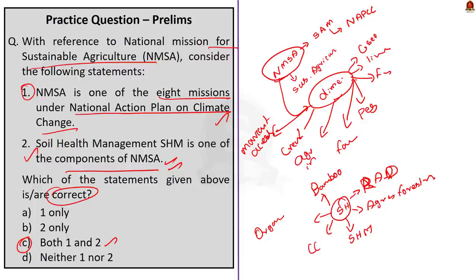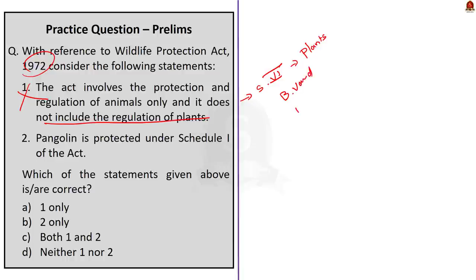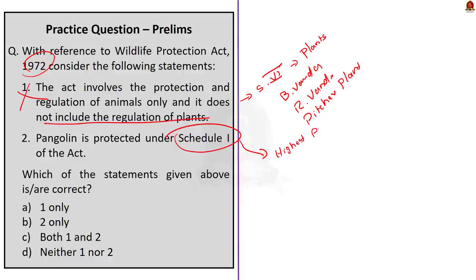The second question is regarding the Wildlife Protection Act 1972 with two statements. Statement 1: The act involves protection and regulation of animals only and does not include regulation of plants — this is wrong, because Schedule 6 of the Wildlife Protection Act 1972 deals with the prohibition of cultivation of certain plants without permission, such as Blue Vanda, Red Vanda, Lady Slipper Orchid, and Pitcher Plant. Statement 2: Pangolin is protected under Schedule 1 of the act — this is correct. Schedule 1 offers the highest form of protection — animals are protected from hunting, poaching, and trading — and pangolin is listed in Schedule 1. Since Statement 1 is incorrect and Statement 2 is correct, the answer is option B: 2 only.